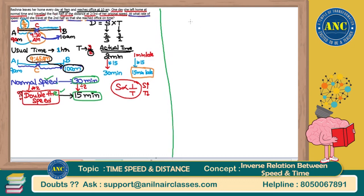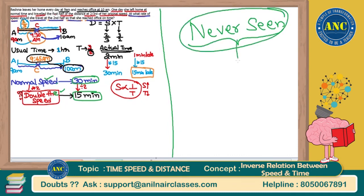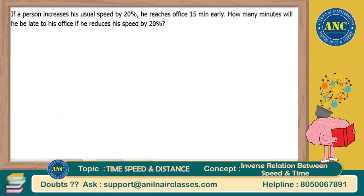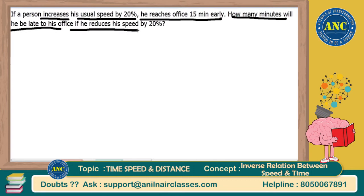A beautiful way of problem solving — a never-seen way of problem solving. Kindly comment in the live chat if this is something unique for you and if you have understood it clearly. See the next question: if a person increases his usual speed by 20%, he reaches office 15 minutes early. How many minutes will he be late to his office if he reduces his speed by 20%? Let us understand the question.